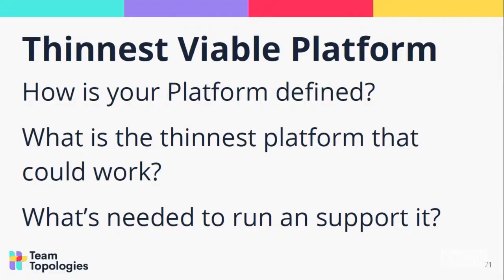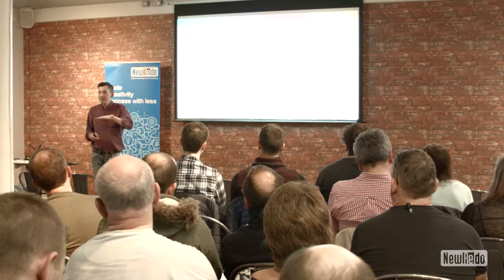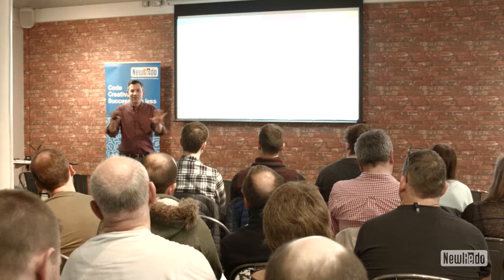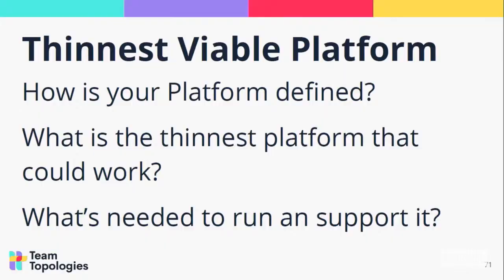One useful place to start is something we call the thinnest viable platform. A platform could be a single wiki page telling you how to use AWS, Azure, or some IoT platform — literally a list of 'install this, run this script, install this certificate, and you're off.' If that's all you need to enable development teams to go more quickly, don't build anything more. You don't want to be building a great big monstrous platform. It needs to be as thin as possible to enable teams to go as quickly and safely as possible.